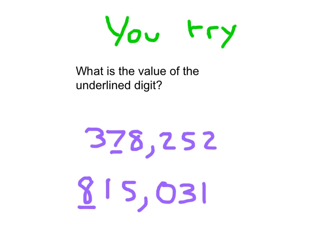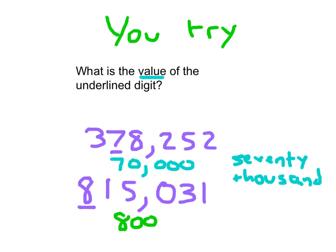Alright, for that first number, the value of that 7 is 70,000. I would have accepted 70,000 or seventy thousand written out. It is in the ten thousands place, but it is worth 70,000. For that other problem, did you write 800,000 as its value?